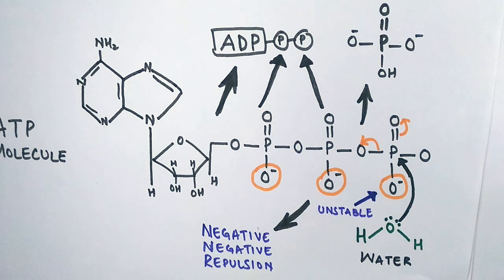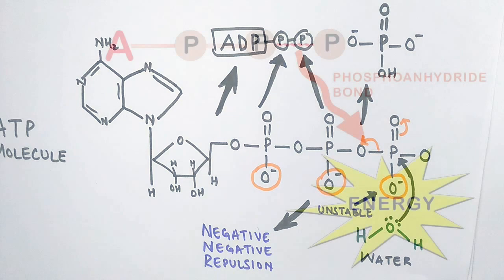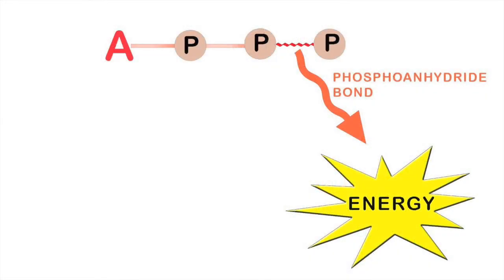When the water molecule comes in, it interacts with the terminal phosphate, and the phosphate is happy to leave the stressed zone. Finally, the bond is broken down. Remember, it is the negative-negative repulsion that aids the tremendous amount of chemical potential energy stored in the phospho-anhydride bond.